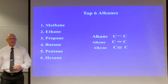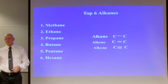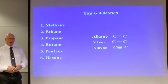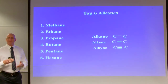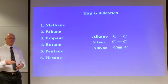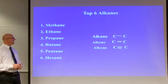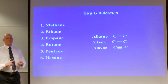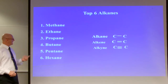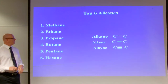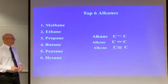Now I'm going to go over the top six alkanes. Our body is organic in nature. The top six are methane, ethane, propane, butane, pentane, and hexane. It's an alkane because we have a carbon-to-carbon single bond. An alkene has two bonds between carbons, and an alkyne has three bonds. We won't deal with alkynes. We will see alkenes and alkanes going forward.